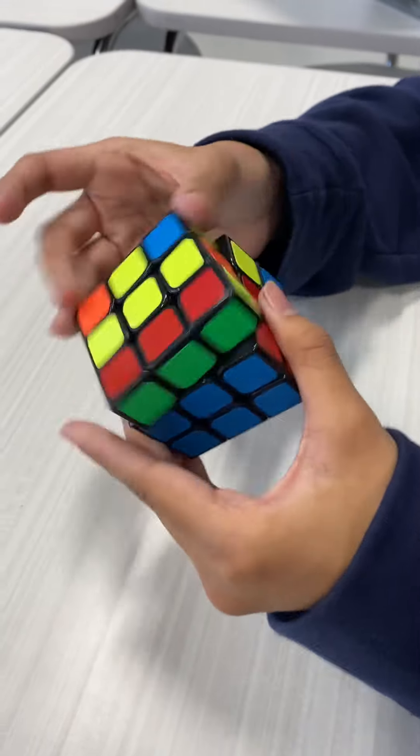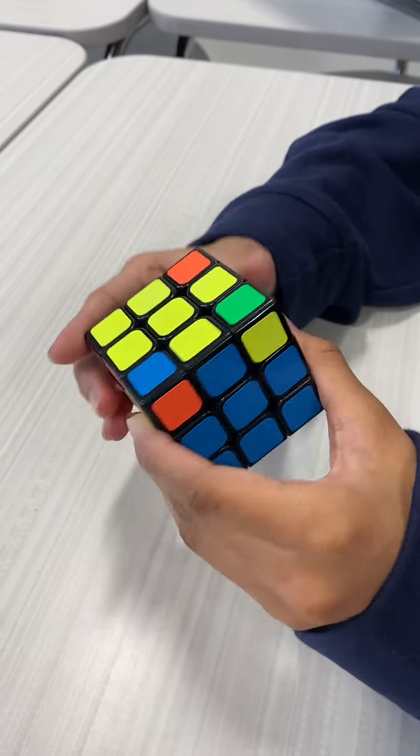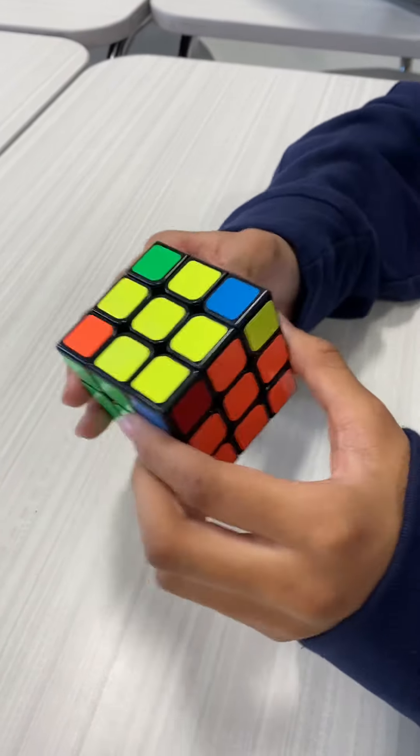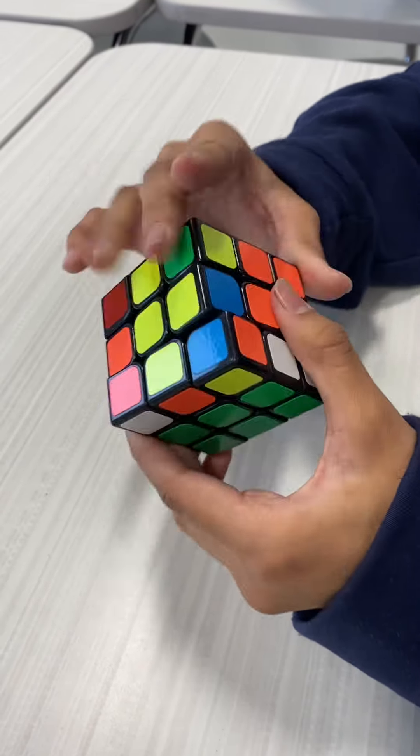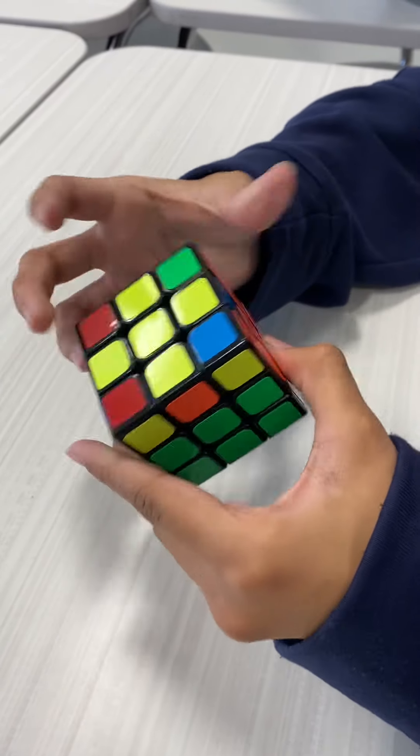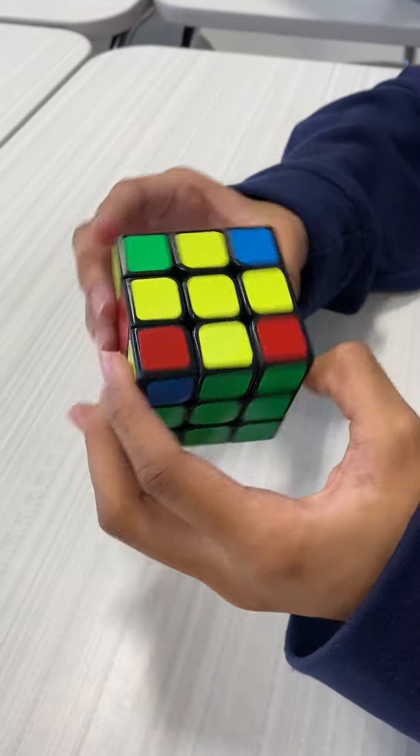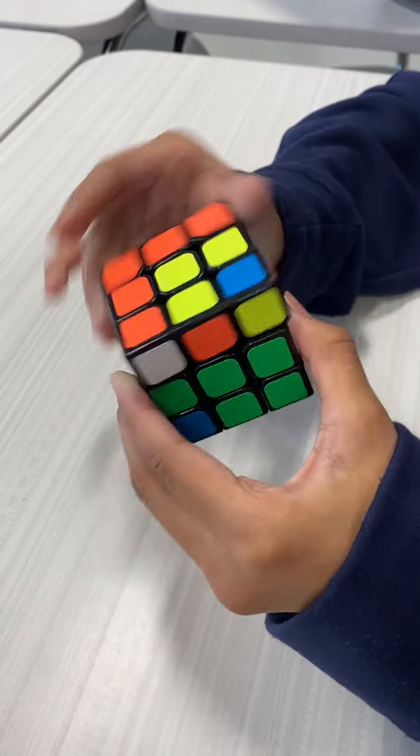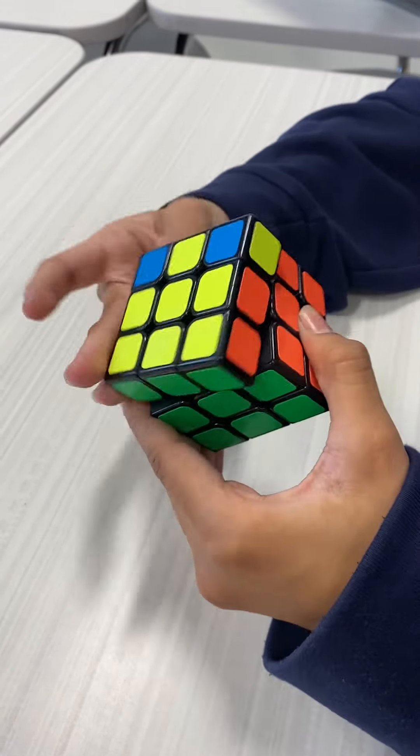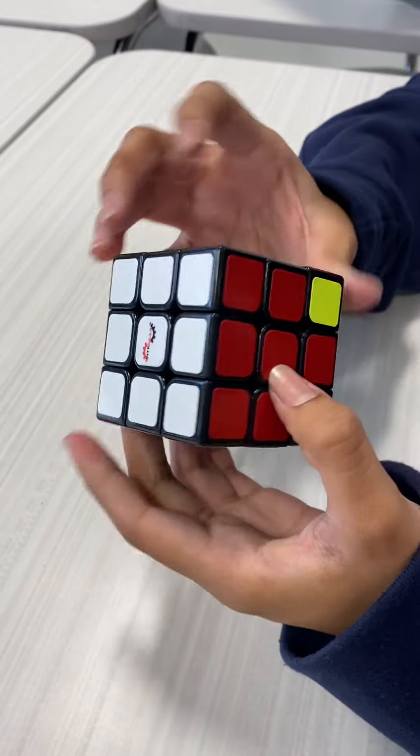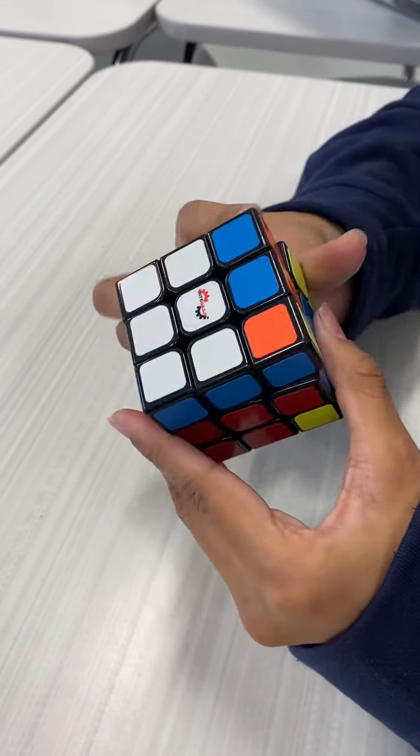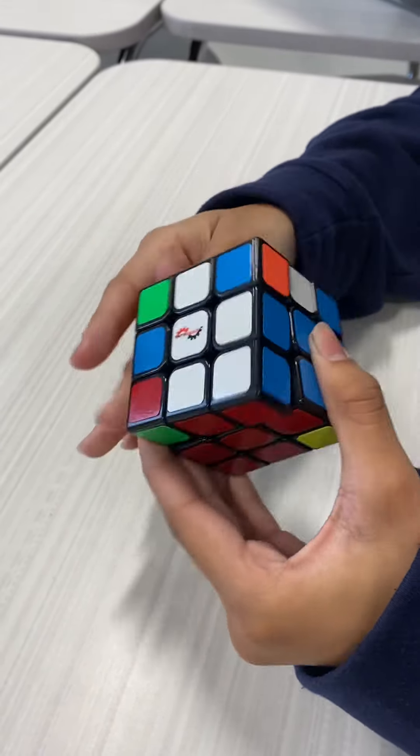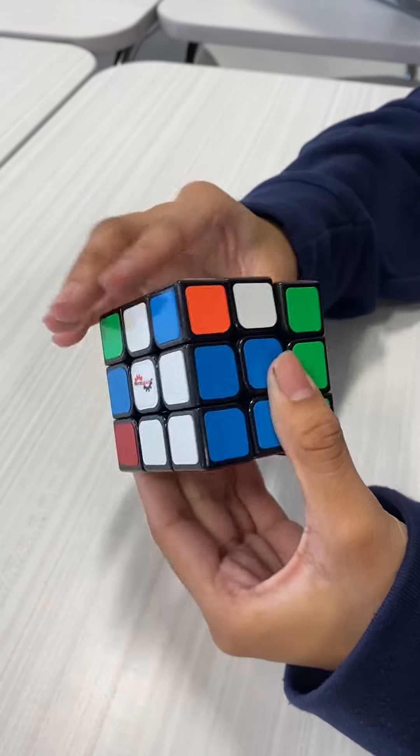You can give her some tips. She's, I see what she's doing. She aligned the yellow cross. Now she's going to place the corners. Yeah. Corners are placed, so now you just have to turn the corners. Now she's just turning the corners.